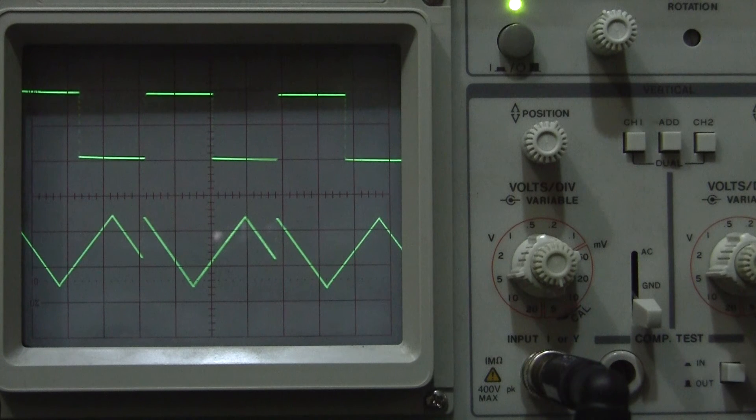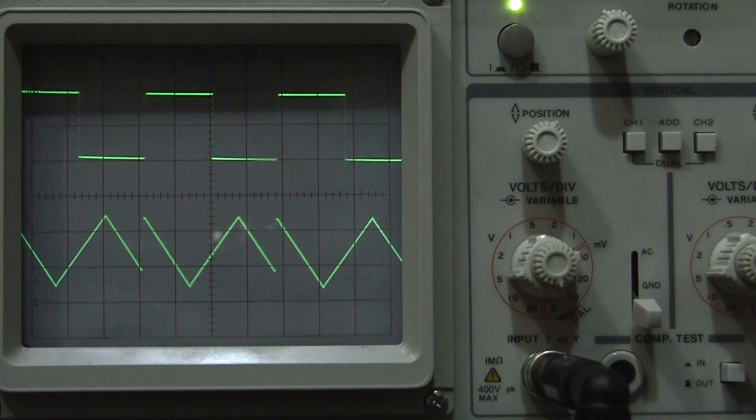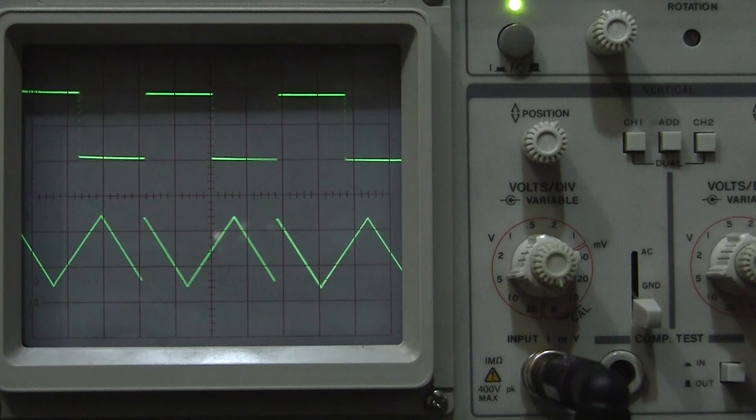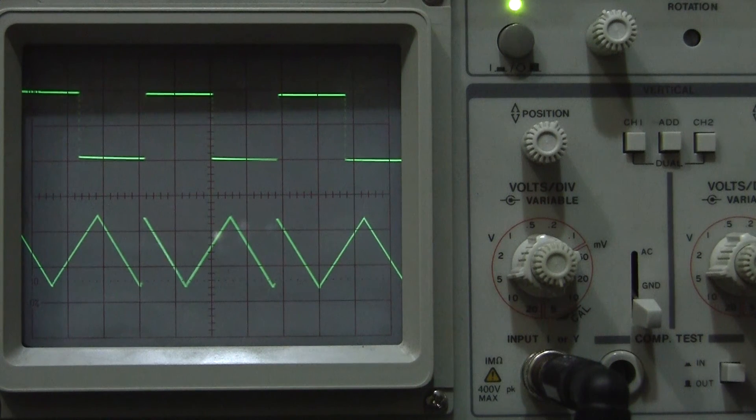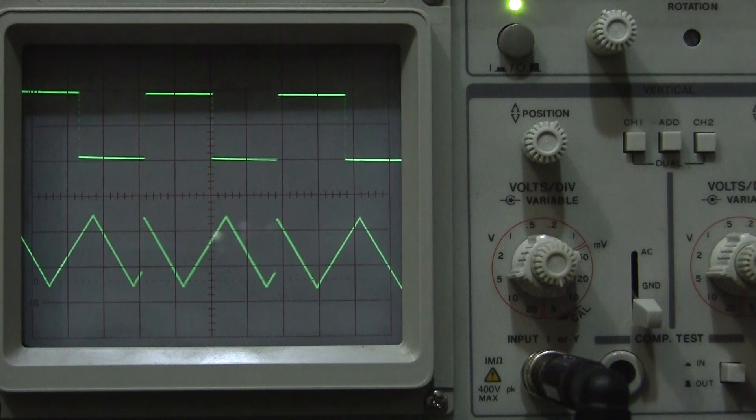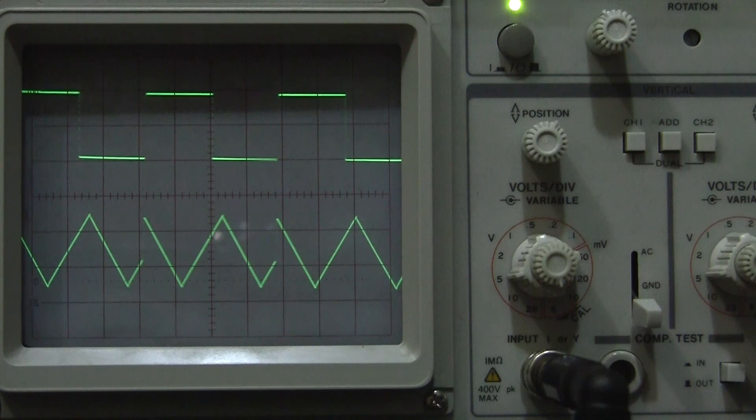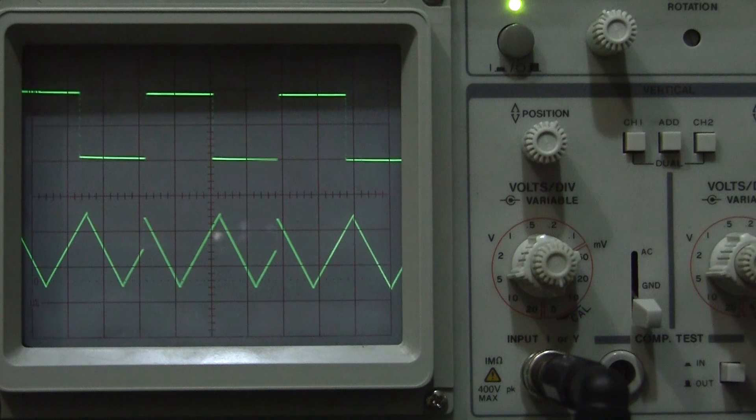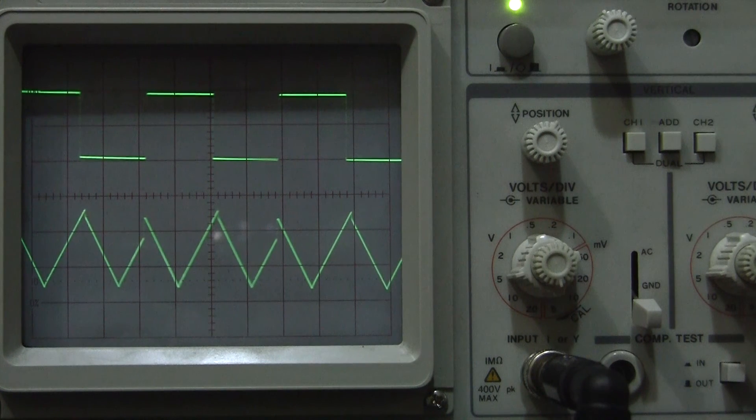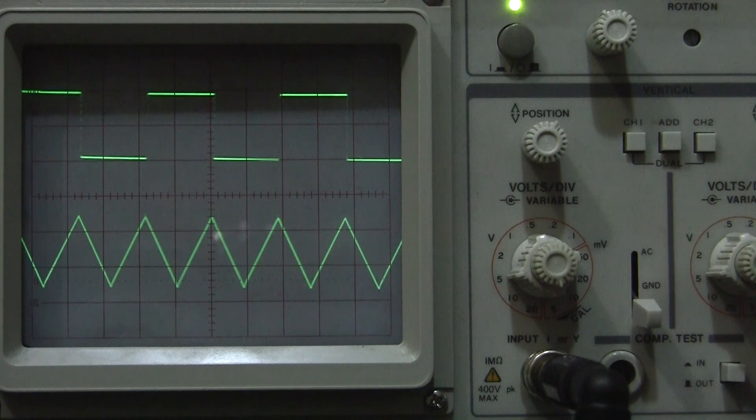Notice that the fundamental frequency hasn't changed, only the timber. Watch as it jumps now the octave. Did you hear that octave jump at the very end? And now look at the waveform and you'll see that we have two triangle waves to one square wave. So it's twice the frequency now on the triangle wave.